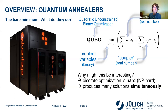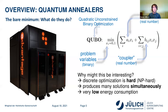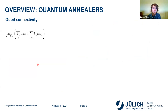Why might this be interesting? One reason is that discrete optimization is hard — you would basically need to try all possible combinations of zeros and ones to find the minimum. These quantum annealers produce many solutions, so-called shots or reads, simultaneously. When I submit a problem, I get typically 1,000 samples — some might not be the global minimum, but I get all of them simultaneously. Sometimes an ensemble of several low-energy solutions is very helpful. The third reason is very low energy consumption due to superconductivity — the system is in the kilowatt regime rather than the megawatt regime.